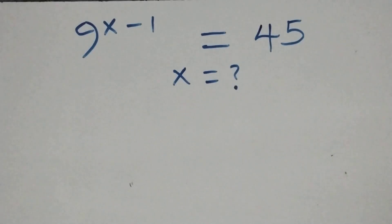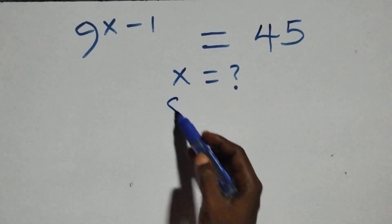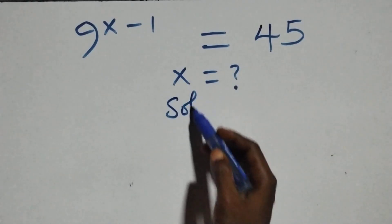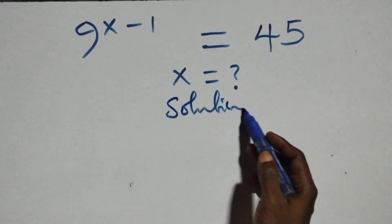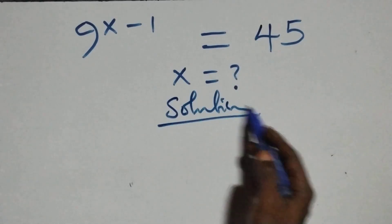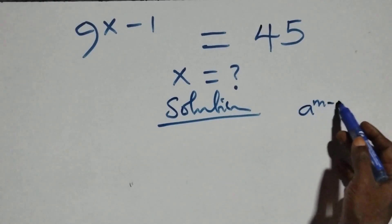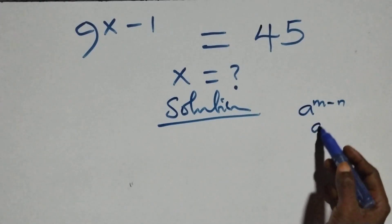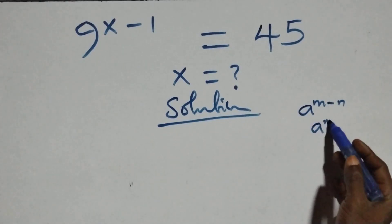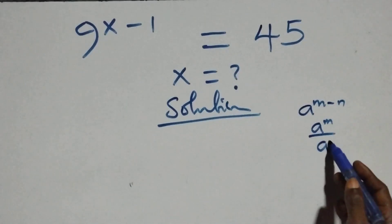Hello, you are welcome. How to solve this nice exponential equation. This follows when we have a raised to power n minus n, which is the same thing as a raised to power n over a raised to power n.